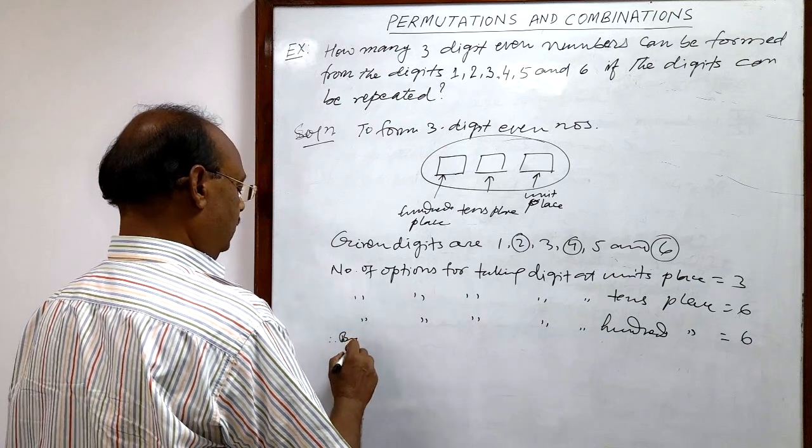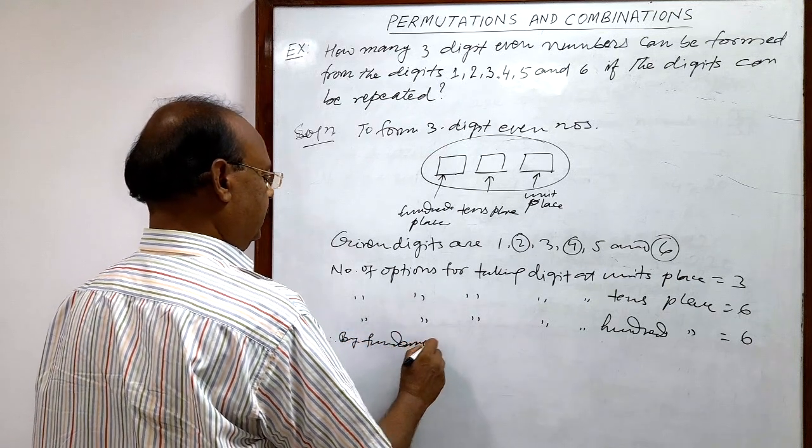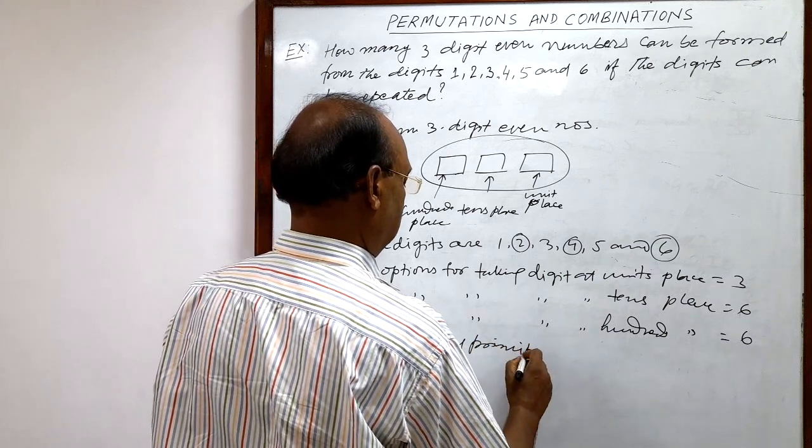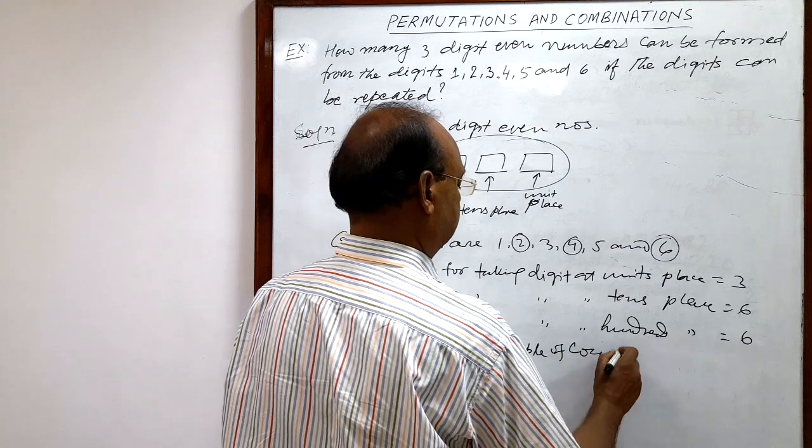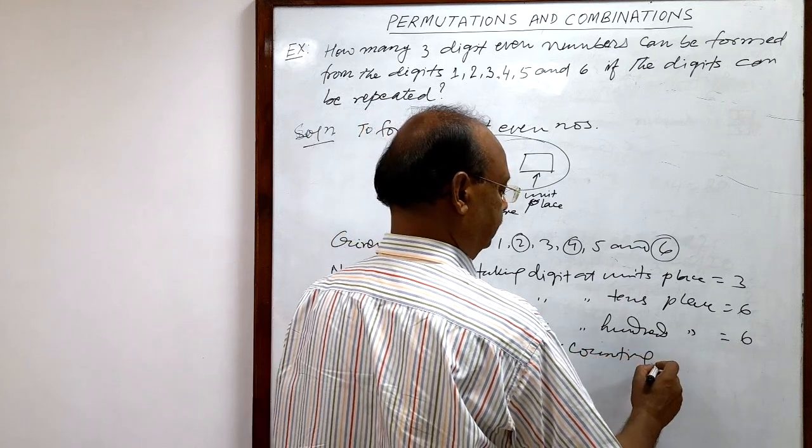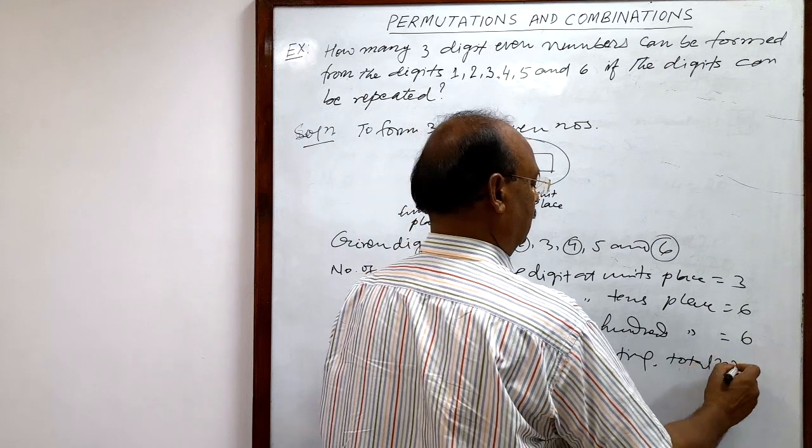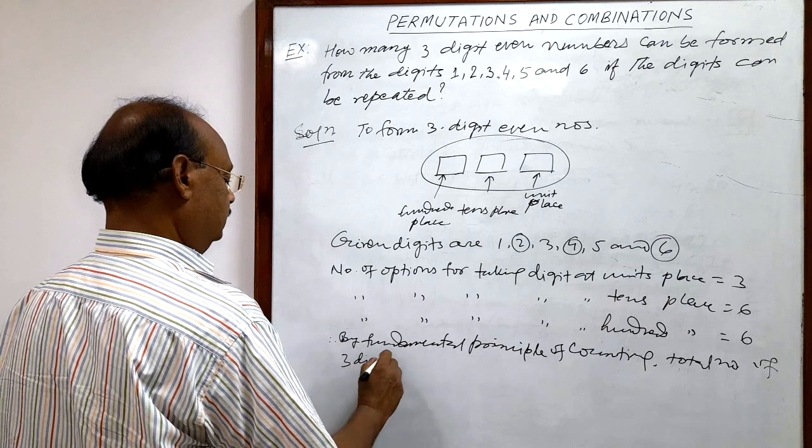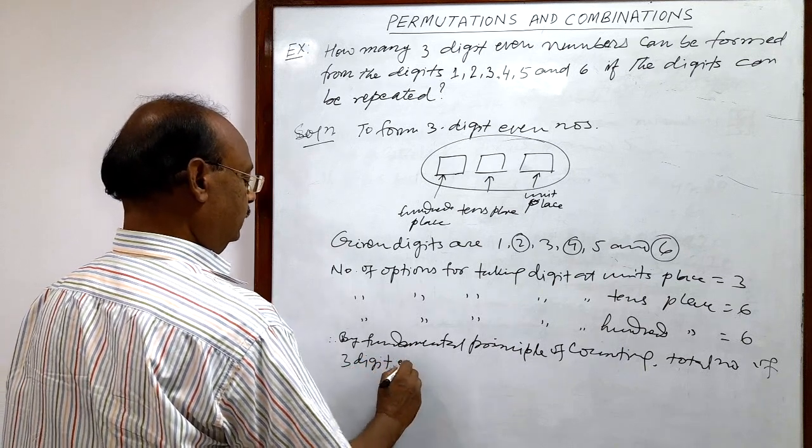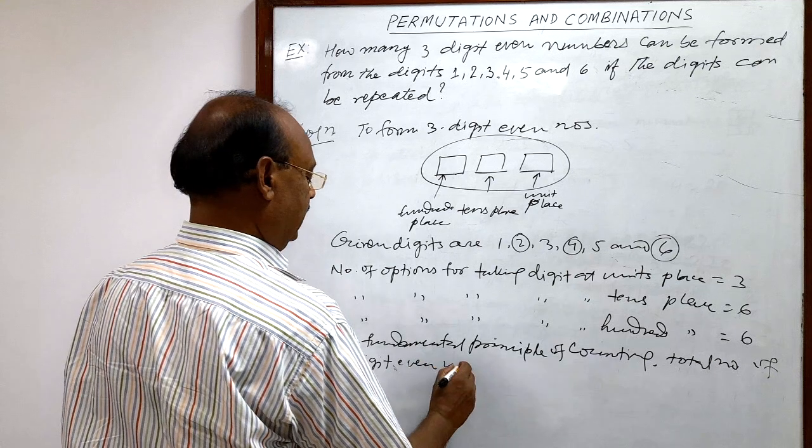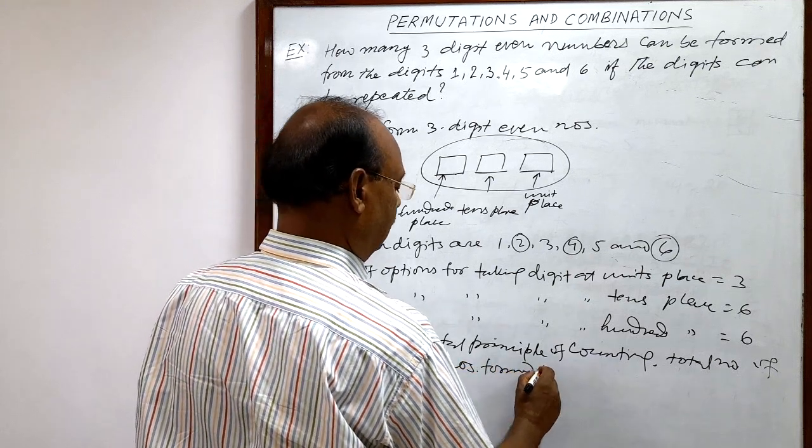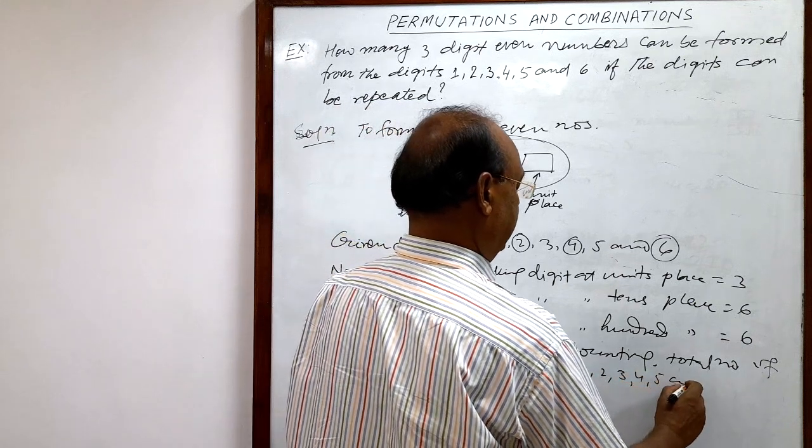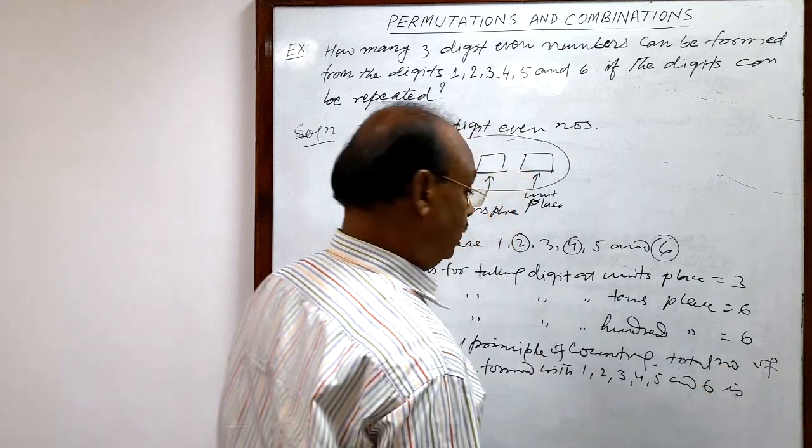So therefore, by fundamental principle of counting, total number of three digit even numbers, three digit even numbers formed with 1, 2, 3, 4, 5 and 6. What is the total number?